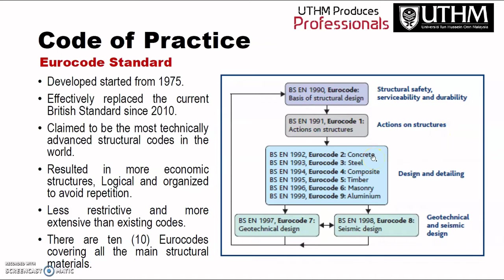Here is the chart for the Euro codes: EN 1990 (Euro code 0) covers the basics of structural design including structural safety, serviceability, and durability. Euro code 1 is for actions on structures, Euro code 2 is for concrete, 3 is for steel, 4 is for composite, 5 is for timber, 6 is for masonry wall (brick wall), 7 is for geotechnical design, 8 is for seismic design for earthquake zone buildings, and 9 is for aluminum.